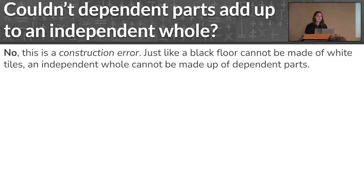So actually, couldn't dependent parts add up to independent holes? Couldn't we have a lot of dependent things, maybe just in succession, and get some sort of an independent hole? Well, in philosophy, we're going to call this a construction error. Just like you can't really take white tiles and add them together to make a black floor, it really doesn't make sense to take an independent thing and make it up of dependent parts, because an independent thing doesn't really have a cause, and a dependent thing does.